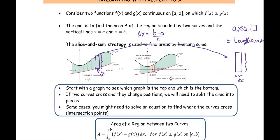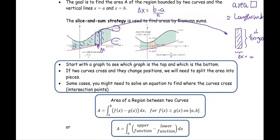The height of the bar — or the length — is the difference of the two functions. In the diagram, the upper graph is function f and the lower graph is function g, so the height is going to be f(x) minus g(x). Based on one bar, we know the width and the length, so the area is length times width. But you have many of them, so you add them all up — that means you have the sum.